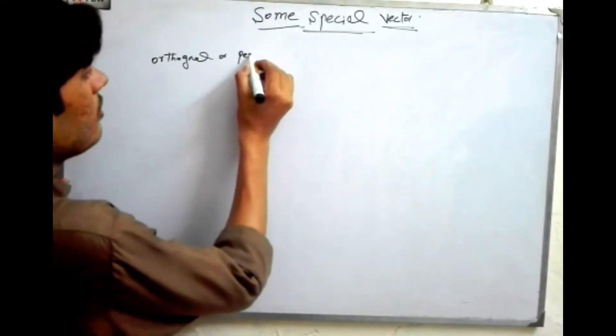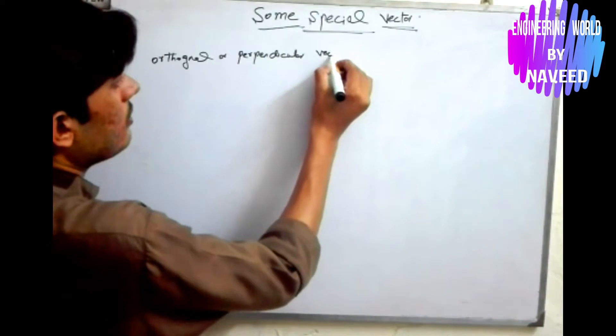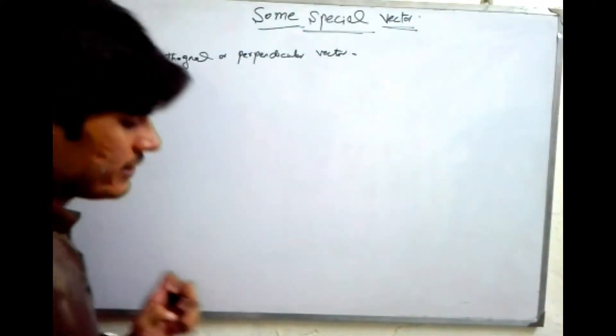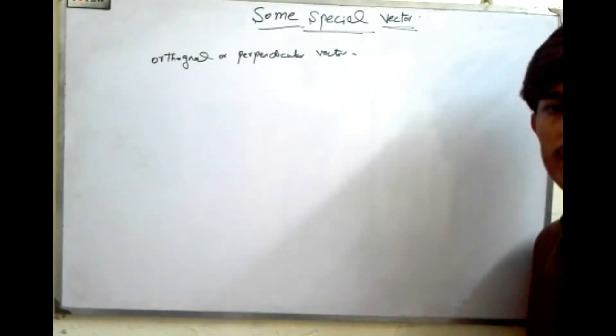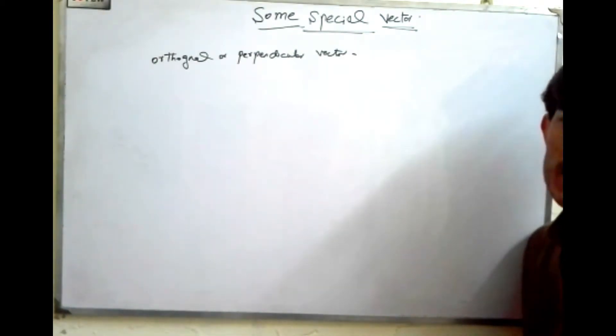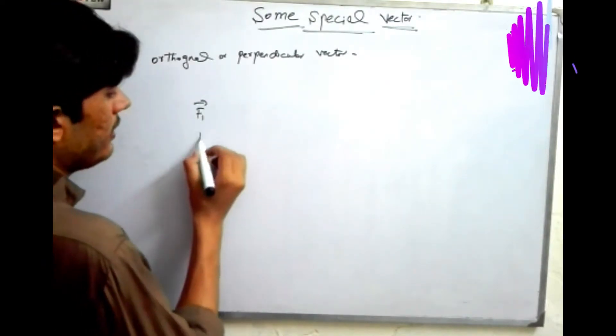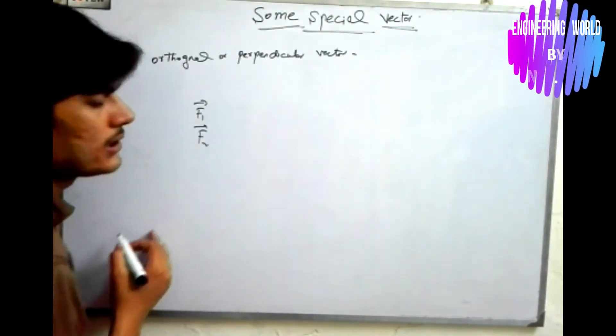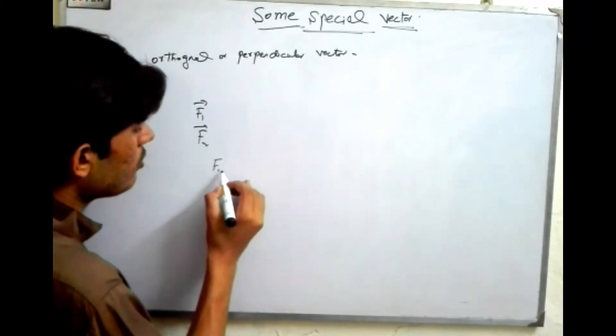Orthogonal or perpendicular vectors: Two vectors are said to be orthogonal or perpendicular with each other if the two vectors are placed at an angle of 90 degrees. If we have two vectors, f1 represented by this sign, and another vector f2 represented by this triangle, f1 will be orthogonal or perpendicular with f2.